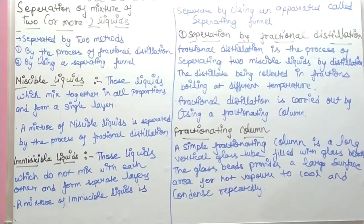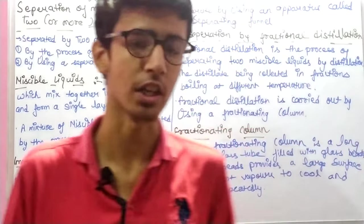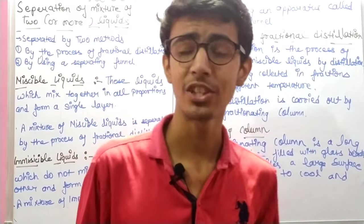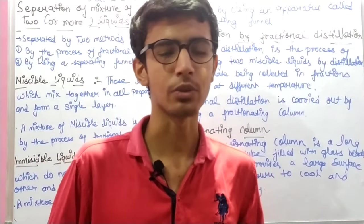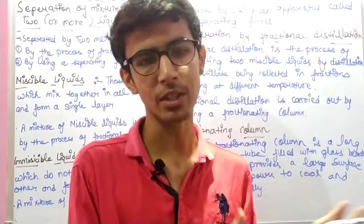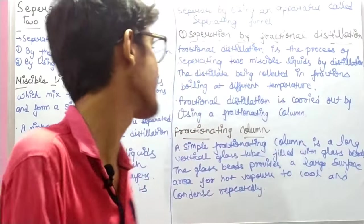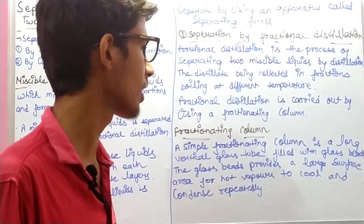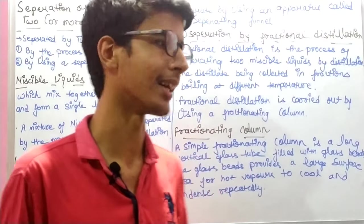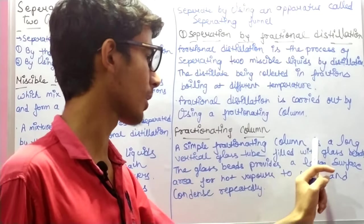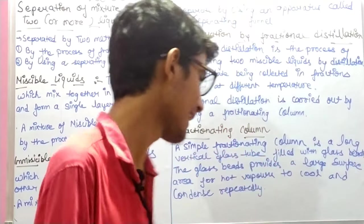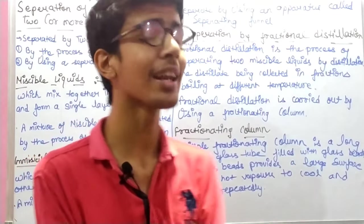The first method is separation by fractional distillation. Fractional distillation is the process of separating two miscible liquids by distillation, where the liquids are collected by boiling at different temperatures. A fractionating column is a long vertical glass tube with glass beads which provide a large surface area.